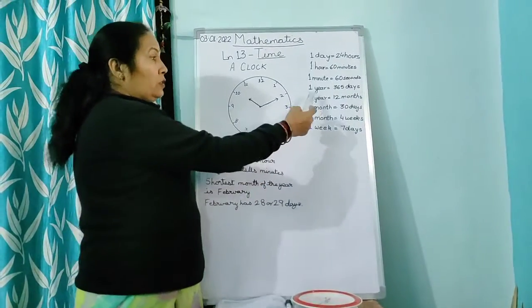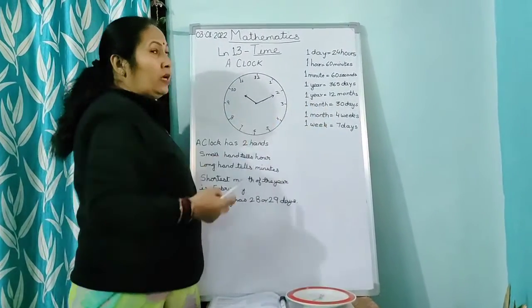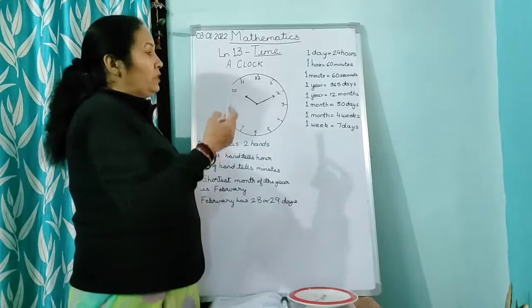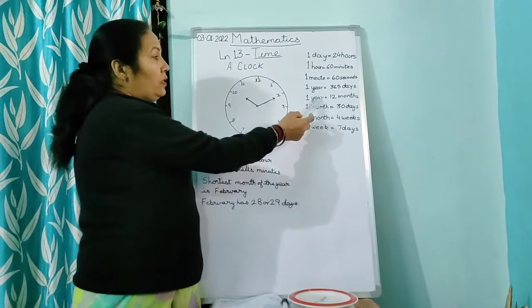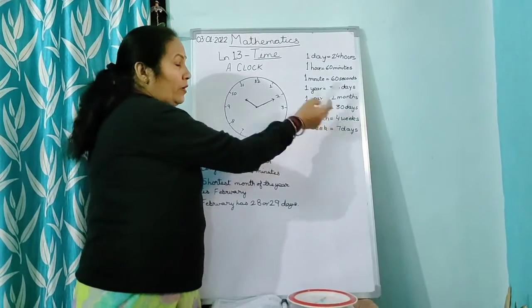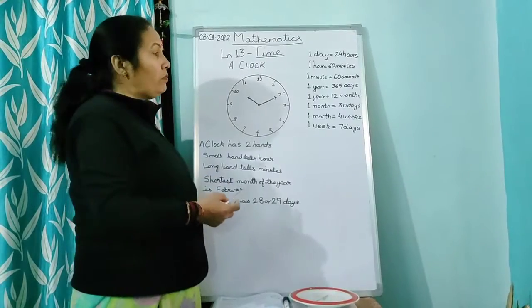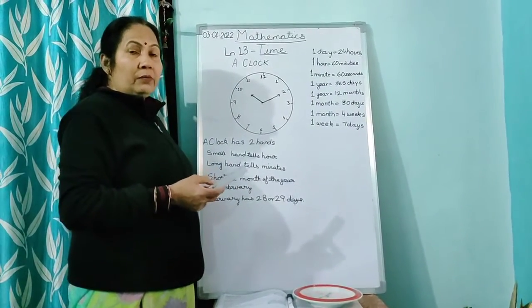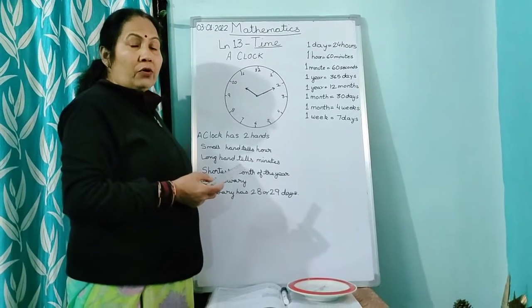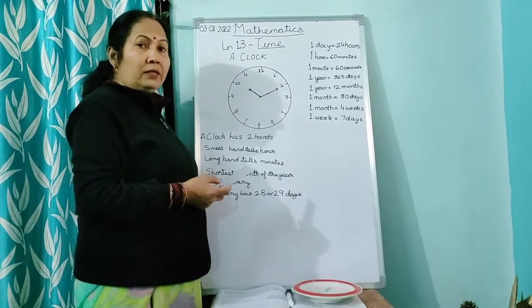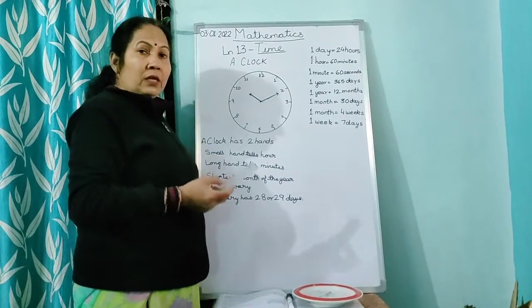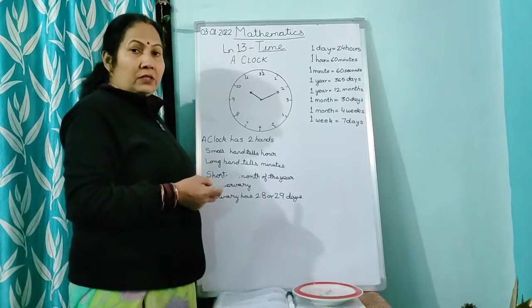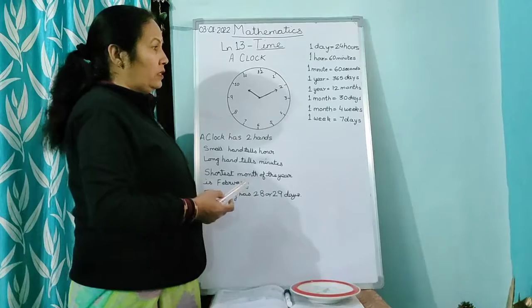Now, you have 1 year is equal to 365 days. This is average. 1 year is equal to 12 months. How many months you have? 12 months. That is, January, February, March, April, May, June, July, August, September, October, November and December. December is the last month and January is the first month of the year.